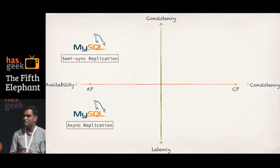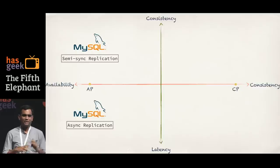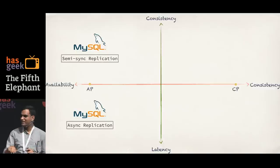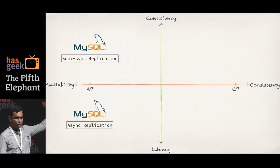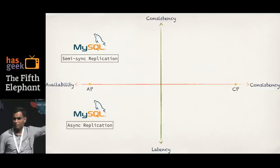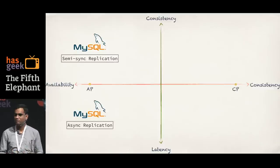MySQL also has a mode called semi-sync replication. In semi-sync mode, whenever you do a write to the master, it synchronously writes to at least one slave configured as a semi-sync replica. But if it's not able to reach any slaves, it falls back to being asynchronous. So in normal mode it chooses consistency via synchronous replication, but when there is a partition and the master can't reach the slave, it chooses availability and foregoes consistency. That's MySQL for you.